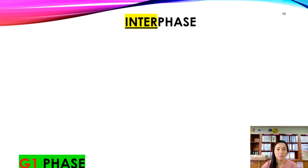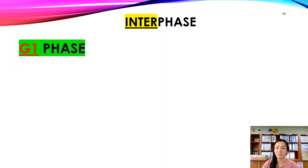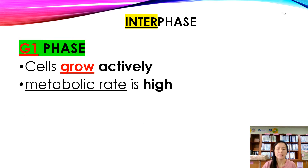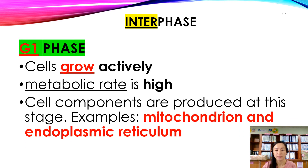During G1 phase, the cell grows actively and the metabolic rate of the cell is high. Cell components such as mitochondria and endoplasmic reticulum are produced during G1 phase.